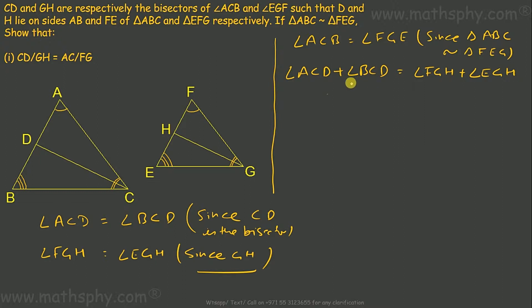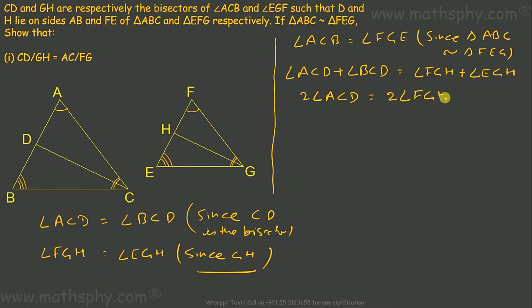Since ACD and BCD are equal, and FGH and EGH are equal, we can write 2 times angle ACD equals 2 times angle FGH, which gives us angle ACD equals angle FGH.